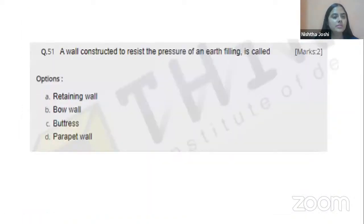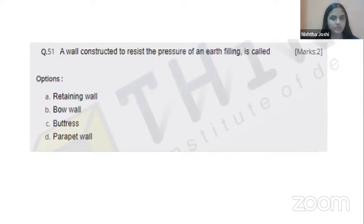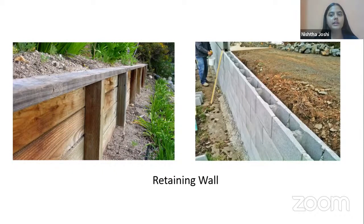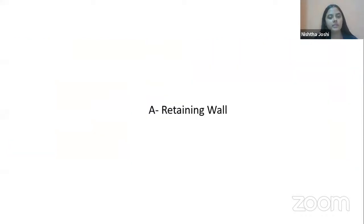A wall constructed to resist the pressure of an earth filling is called: retaining wall, bow wall, buttress, or parapet wall? Walls made to retain earth filling and its pressure are known as retaining walls. Reference images show these walls holding back earth behind them. The right option is retaining wall.